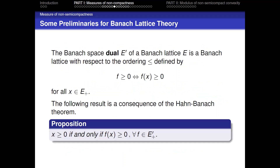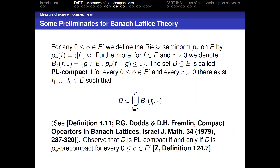For instance, a Banach lattice E has order continuous norm if and only if every order interval of E is weakly compact. Every reflexive Banach lattice has order continuous norm. The space L^p has order continuous norm if and only if p is finite, so L^∞ has no order continuous norm. The Banach dual E' of a Banach lattice E is a Banach lattice with ordering defined by f ≥ 0 if and only if f(x) ≥ 0 for all positive x.